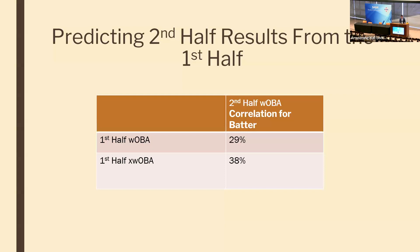Weighted on-base average, or wOBA, is commonly accepted as one of the best stats for summarizing a hitter's value at the plate. But when comparing first-half to second-half wOBA, first-half xwOBA is actually more predictive of future wOBA than wOBA itself. xwOBA only looks at launch angle and exit velocity to predict the batted ball outcome, attempting to filter out luck and defensive impact.